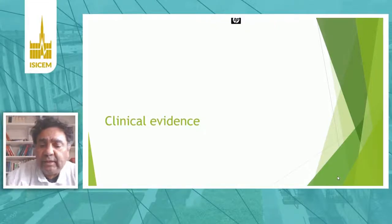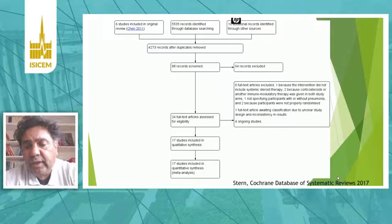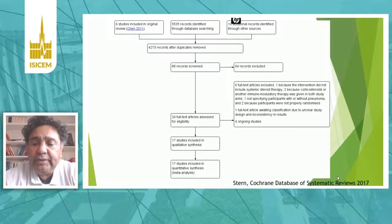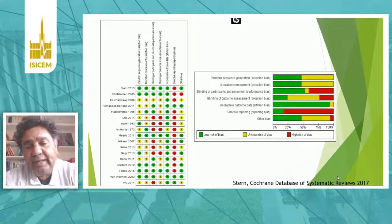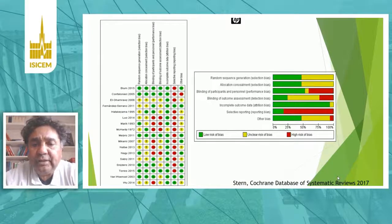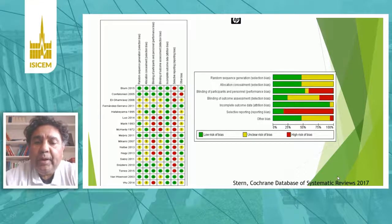Let's now look at the clinical evidence. The most robust clinical evidence so far comes from the Cochrane systematic review published in 2017. In this systematic review and meta-analysis, 17 RCTs were included. On average, the methodological quality of included studies was rated mild to moderate, with a number of issues related to blinding of participants and personnel — performance biases — as well as detection biases with blinding of outcome assessment. There were also issues about selective reporting and potential risks for reporting biases.